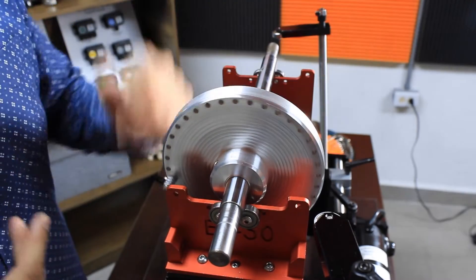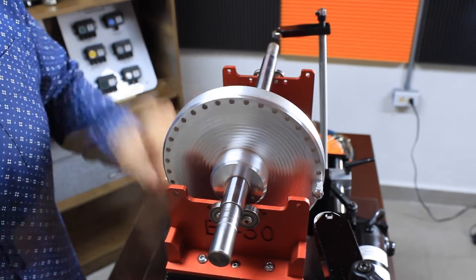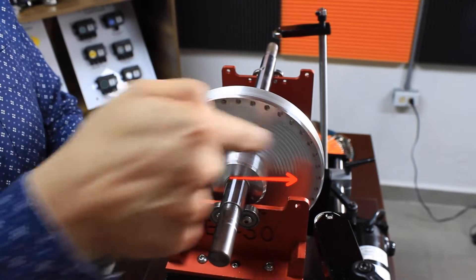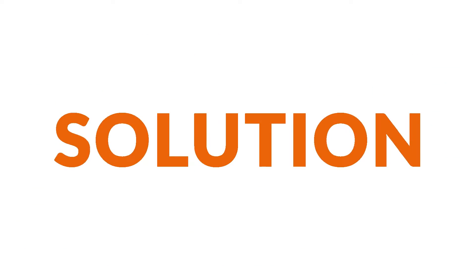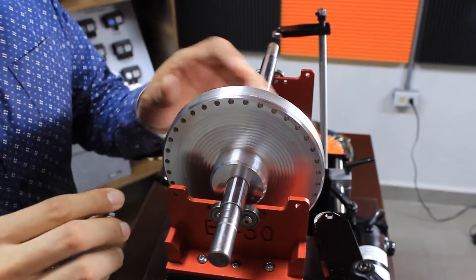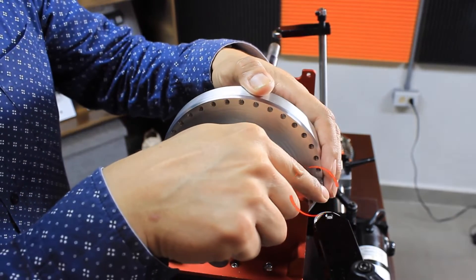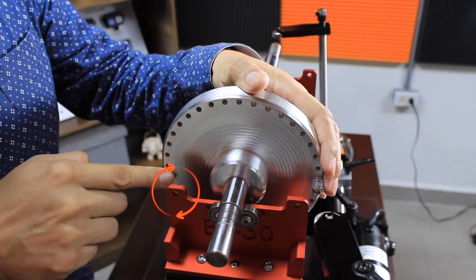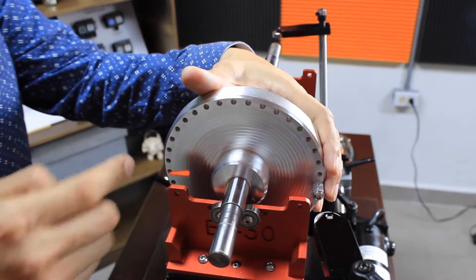Because there is a force exerted by this weight that is not being canceled out. What is the solution? Compensating for that mass, we place a mass of the same weight in the opposite direction and at 180 degrees.